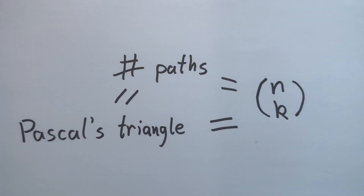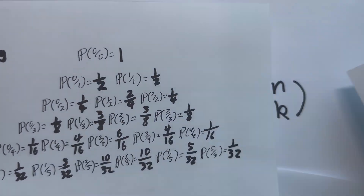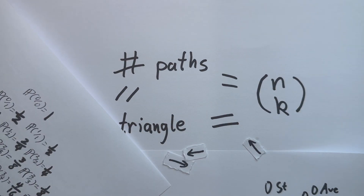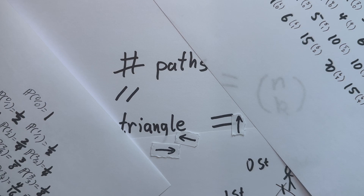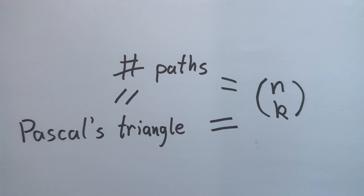To reiterate: we proved the numbers in Pascal's Triangle are the numbers of paths to these points, and then proved that the number of paths to a point is n choose k. Therefore Pascal's Triangle is made of n choose k's — which also explains why those numerators appear in the probabilities of test scores. We used a path-counting argument as a middleman to prove a fact that has nothing to do with paths. I think that's pretty amazing.